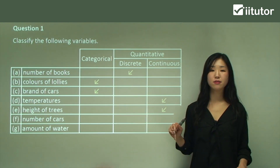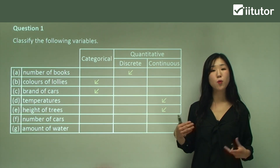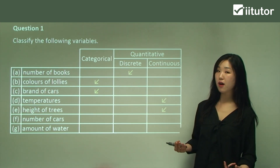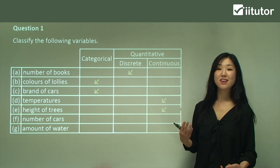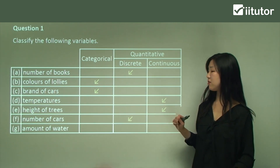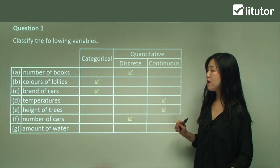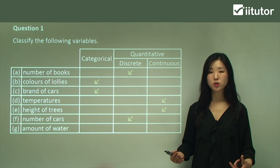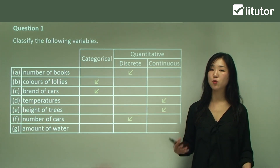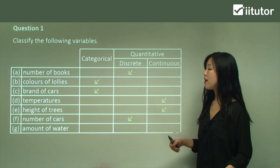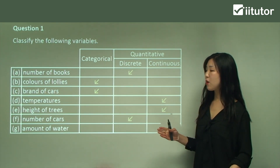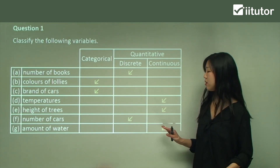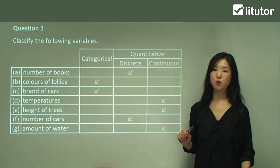Now F — number of cars. Number of cars is a quantity, and can we count the number of cars? Yes, we can. If it's countable, it must be discrete. Now G — amount of water. Amount of water is a quantitative measure, but can we count the amount of water? Water is not countable, so it must be a continuous variable.